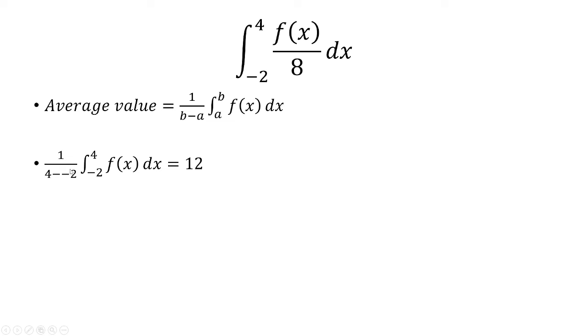We said that the average value of the function in this interval is 12. Now we can simplify 4 minus negative 2 as 6, and the goal is to get 1 eighth times the integral.